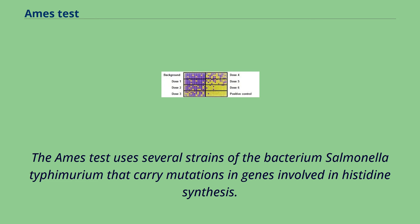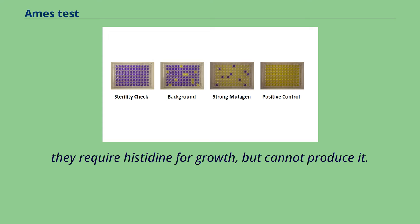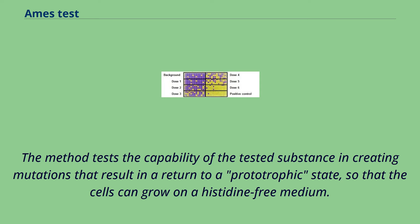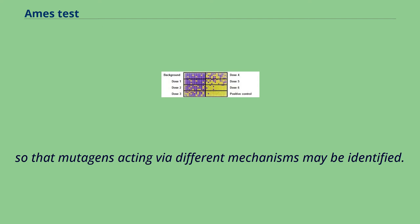The Ames test uses several strains of the bacterium Salmonella typhimurium that carry mutations in genes involved in histidine synthesis. These strains are auxotrophic mutants — they require histidine for growth but cannot produce it. The method tests the capability of the tested substance in creating mutations that result in a return to a prototrophic state, so that the cells can grow on a histidine-free medium. The tester strains are specially constructed to detect either frameshift or point mutations in the genes required to synthesize histidine, so that mutagens acting via different mechanisms may be identified.